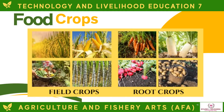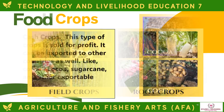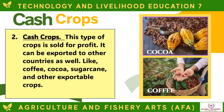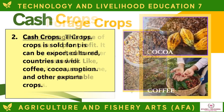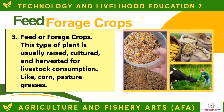Here are some examples of food crops. Cash crops are sold for profit and can be exported to other countries, such as coffee, cocoa, sugarcane, and other exportable crops. Feed or forage crops are usually raised, cultured, and harvested for livestock consumption, like corn and pasture grasses.